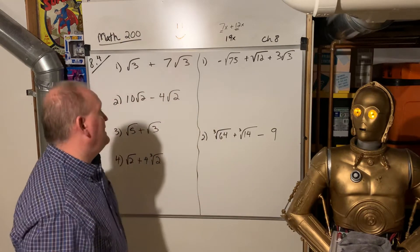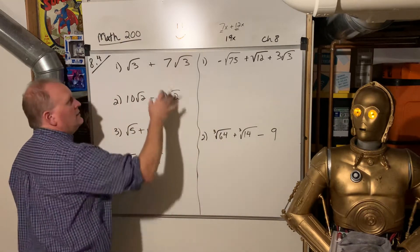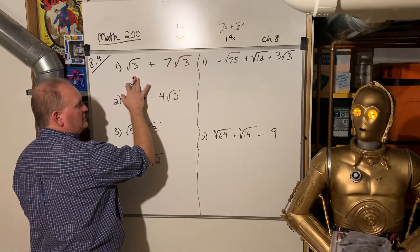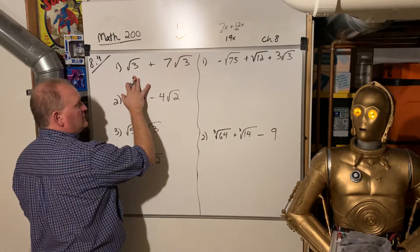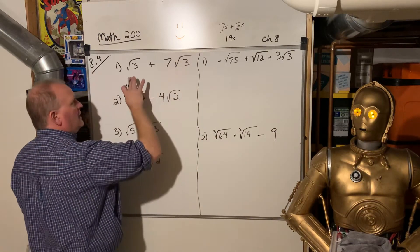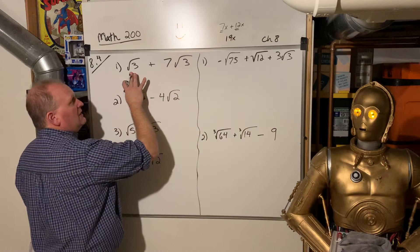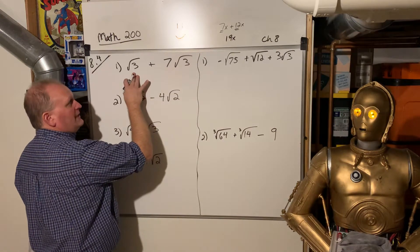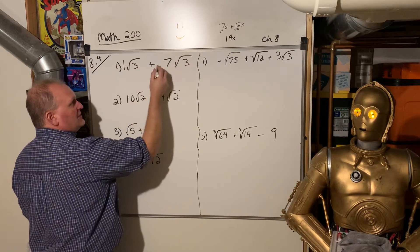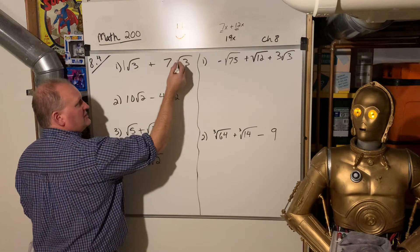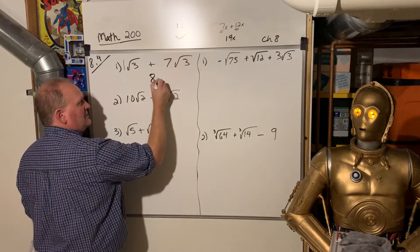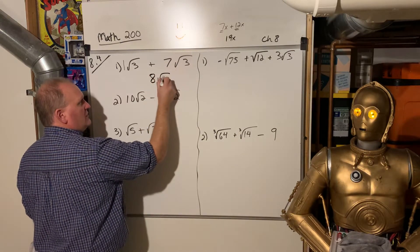We're going to do the same thing now with radicals — with square roots, or cube roots, or fourth or fifth roots. So look: this is 1 square root of 3 plus 7 square roots of 3. That is 8 square roots of 3.